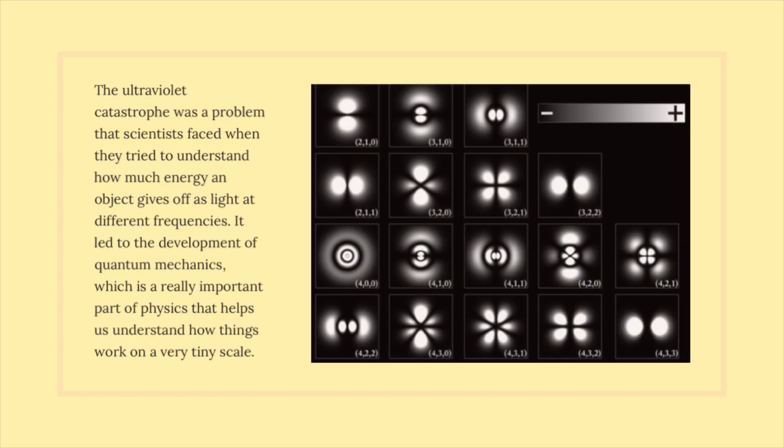The ultraviolet catastrophe was a problem that scientists faced when they tried to understand how much energy an object gives off as light at different frequencies. It led to the development of quantum mechanics, which is a really important part of physics that helps us understand how things work on a very tiny scale.